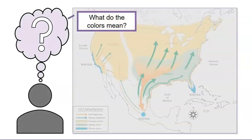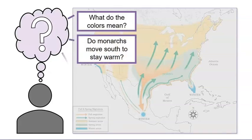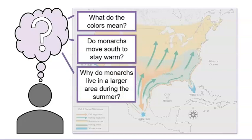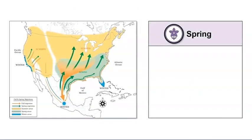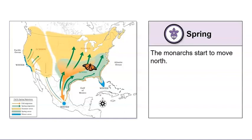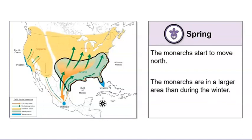I still have some other questions. Do monarchs move south to stay warm? Why do monarchs live in a larger area during the summer? Maybe we can explore the map to help us understand where butterflies move season by season. Let's start by looking at spring. Look at all those green arrows. The green arrows show us where the butterflies go in the spring. I noticed that in the spring, the monarchs start to move north. I also noticed that the monarchs are in a larger area than during the winter.